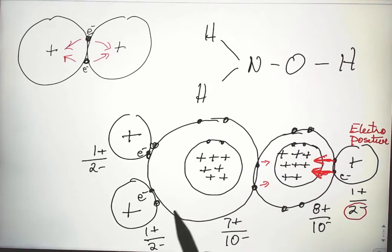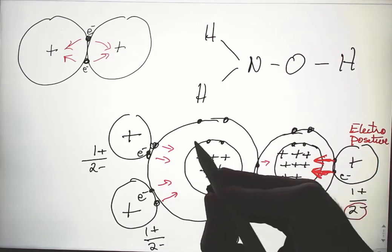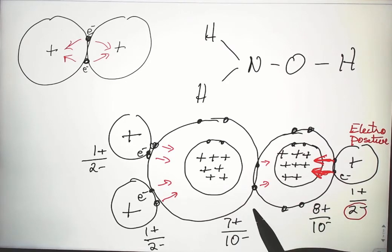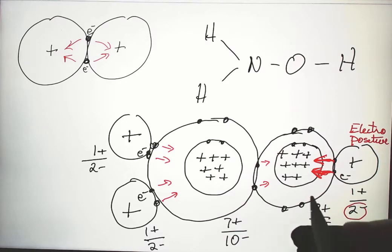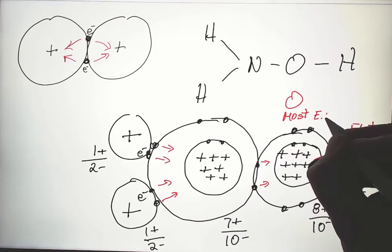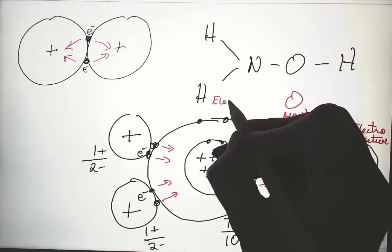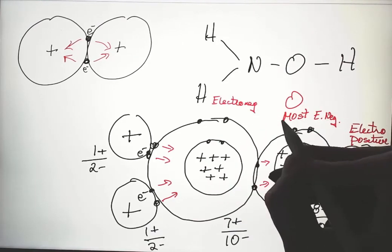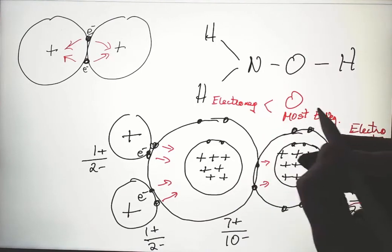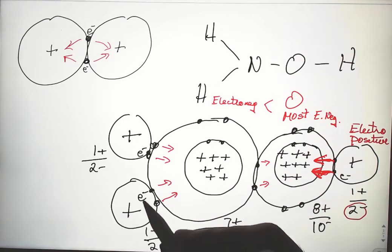Comparing nitrogen to these hydrogens: we have seven over ten attracting versus only one-half — seven over ten is close to two-thirds. So these electrons are attracted more toward the nucleus of nitrogen than toward the hydrogen. What we have is that oxygen is the most electronegative of these three. Nitrogen is electronegative but not as much as oxygen, and the hydrogens are actually electropositive — less electronegative than either one.